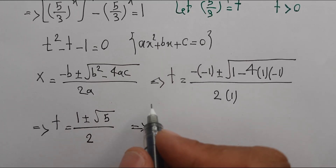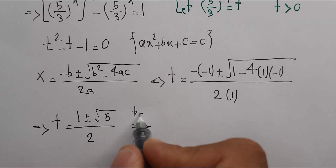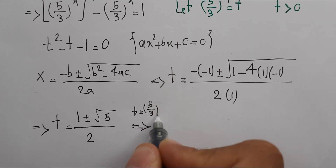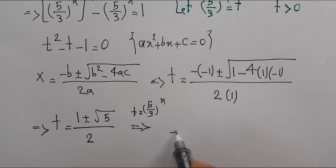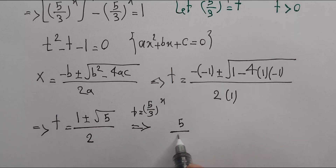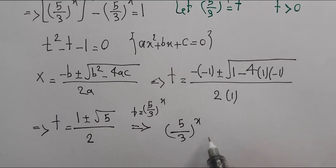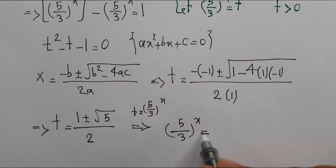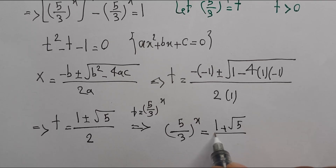So t equals (1 ± √5) / 2. Since t = (5/3)^x and t must be greater than 0, we take the positive root: (5/3)^x = (1 + √5) / 2.